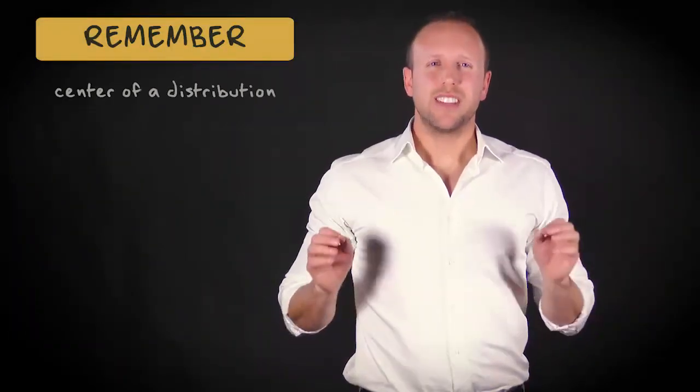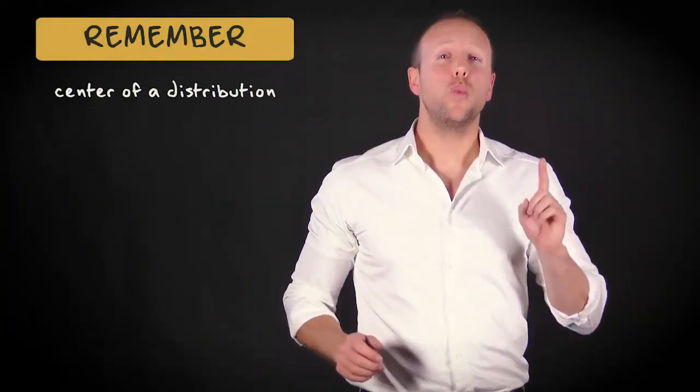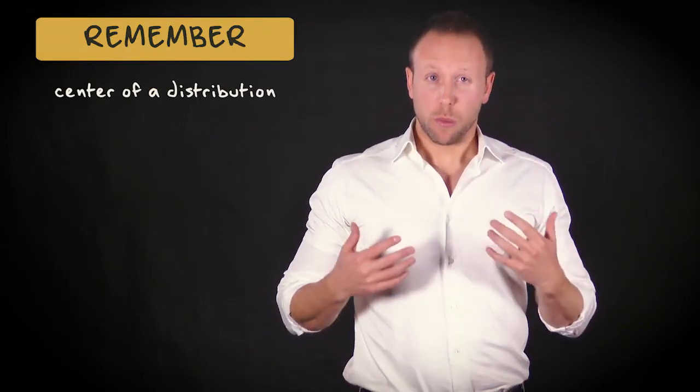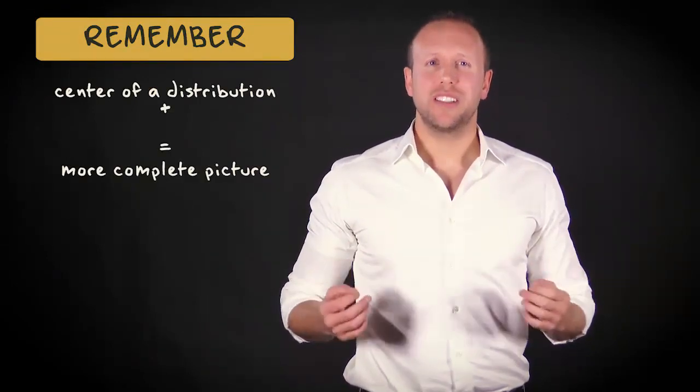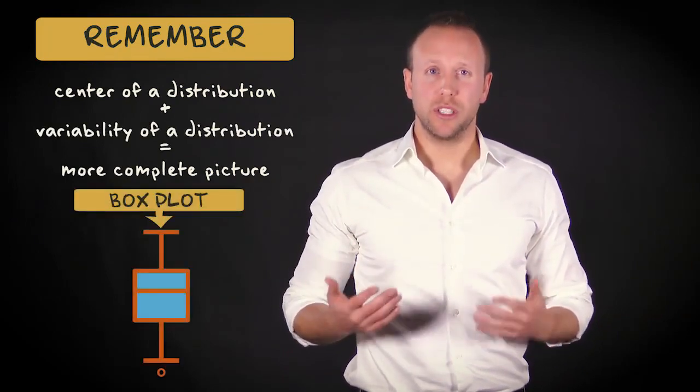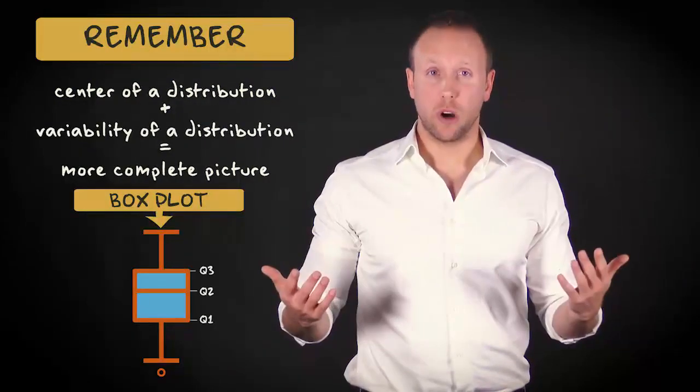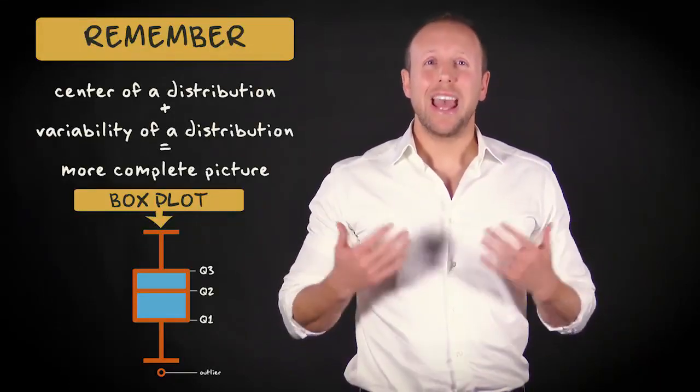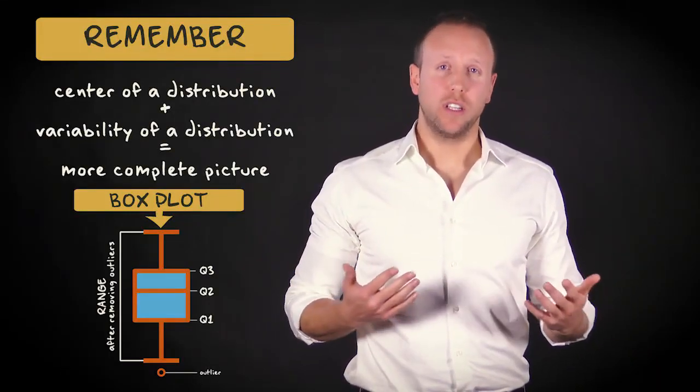So remember, the center of a distribution only tells you one part of the story. For a more complete picture, also assess the variability of a distribution. A box plot shows important aspects of a distribution in a compact way, using three quartiles, the outliers, and the range of the data after removing the outliers.